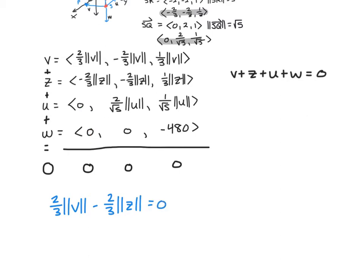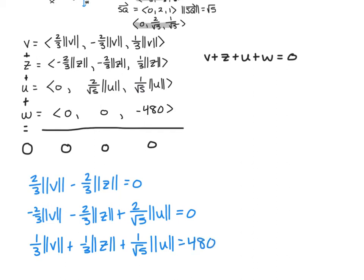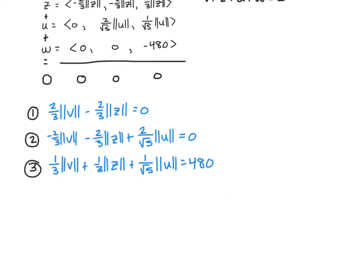The second equation from column 2 is: -(2/3)|V| - (2/3)|Z| + (2/√5)|U| = 0. The third equation from column 3 is: (1/3)|V| + (1/3)|Z| + (1/√5)|U| = 480, moving the -480 to the right side.